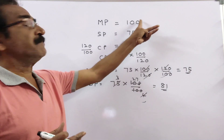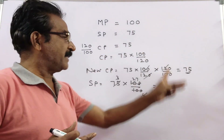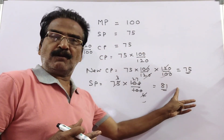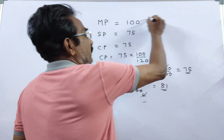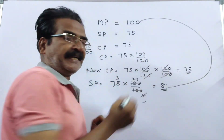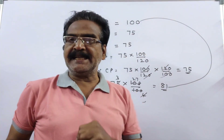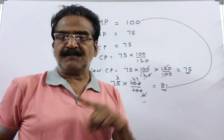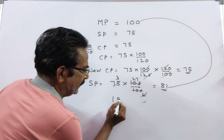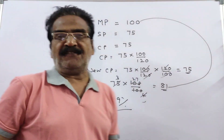So the marked price is 100, and the new sold price is 81. The article must be sold at a discount of 19%. That is 100 minus 81 equals 19, so a 19% discount must be offered.